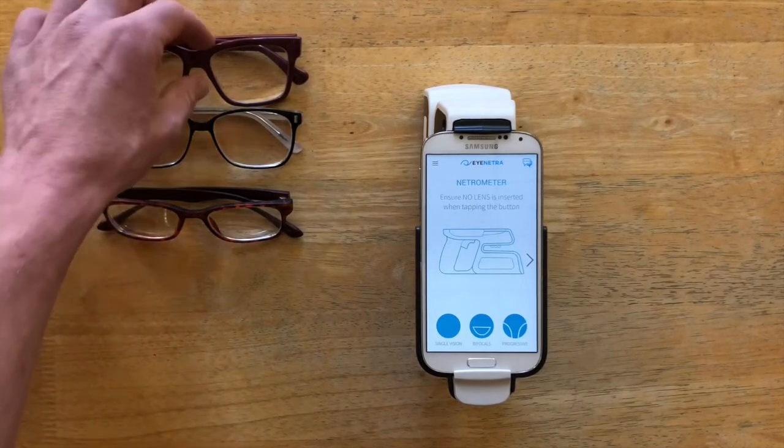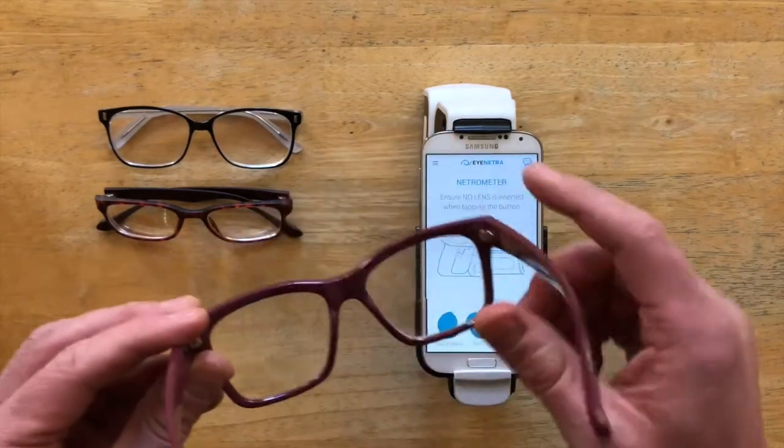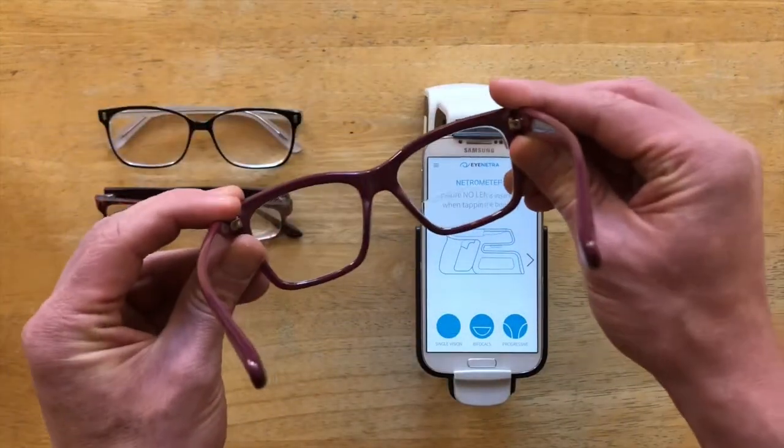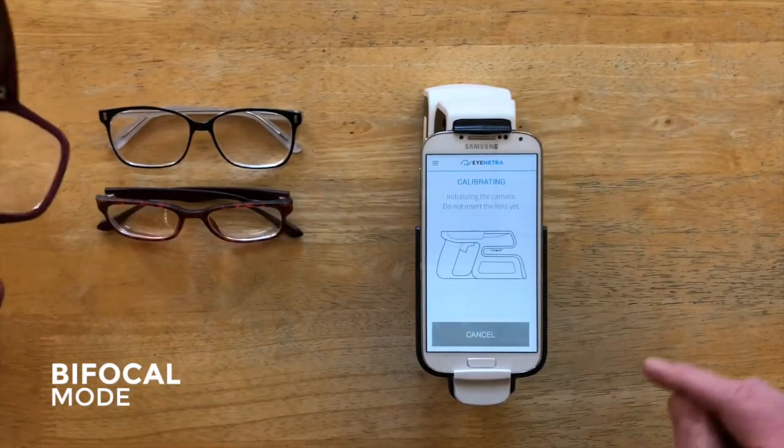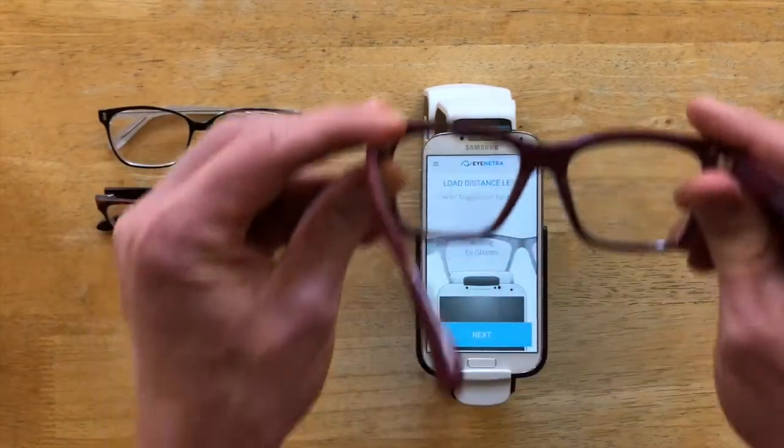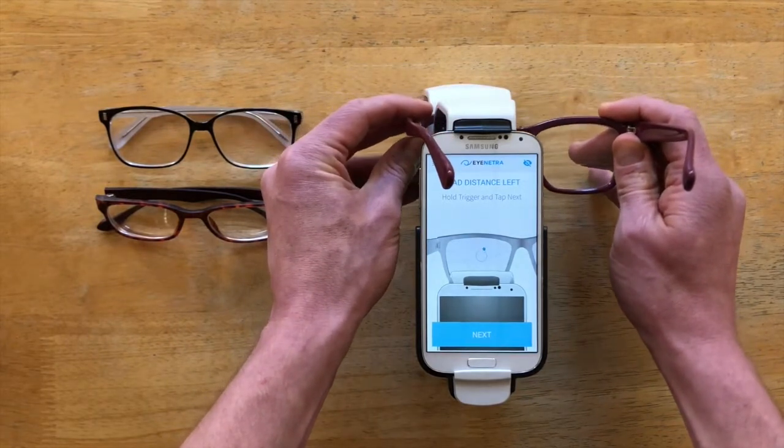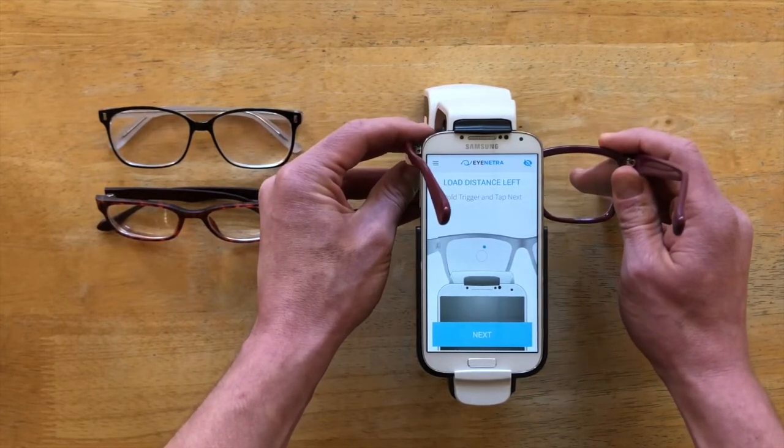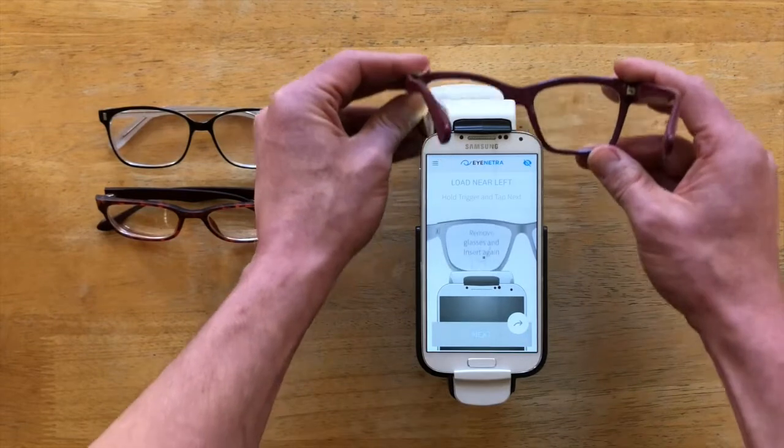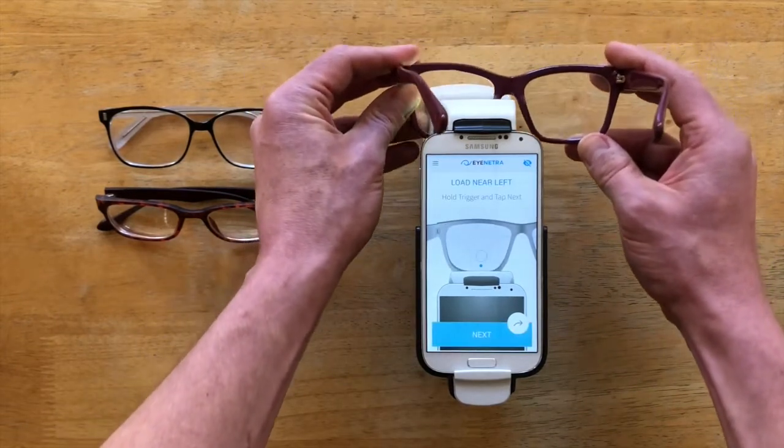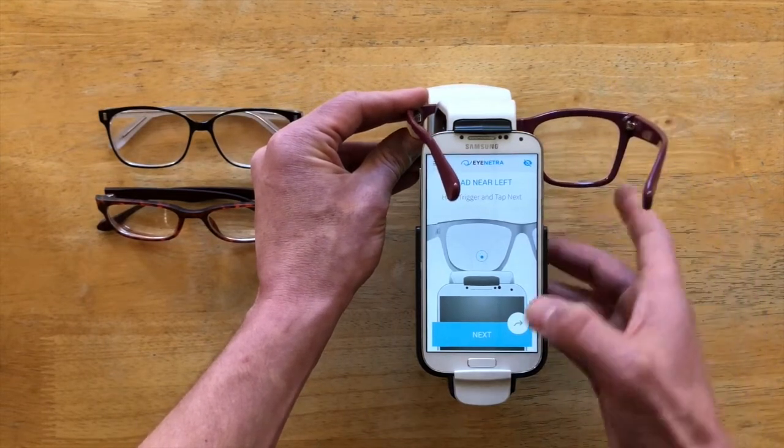Now the process for bifocals is very similar to progressives. There's just one tiny change. The only change is that after I measure the distance portion, I'm going to remove my glasses and then reinsert them to grab the add value. So let's show you how that works. I'll select bifocals, allow the device to calibrate. Again, I'll begin with the left lens, insert the glasses, find that distance measurement, and tap next. And then I'm going to remove the glasses and then reinsert them slowly. There we are. And tap next.